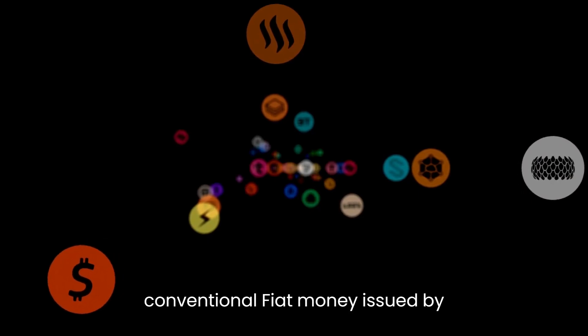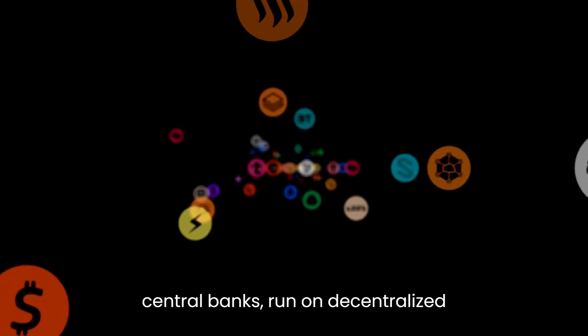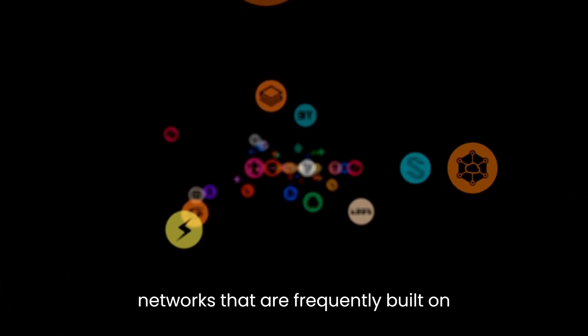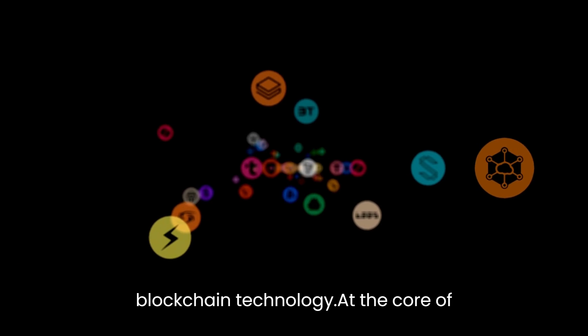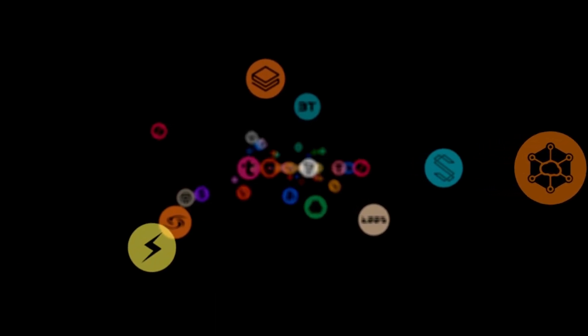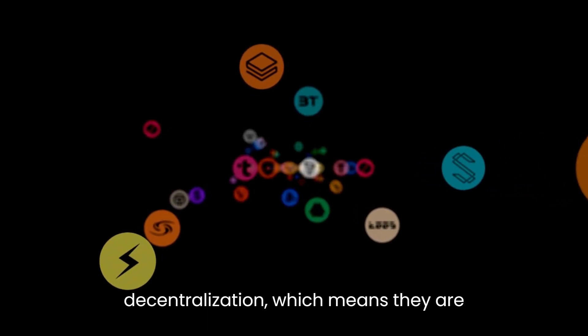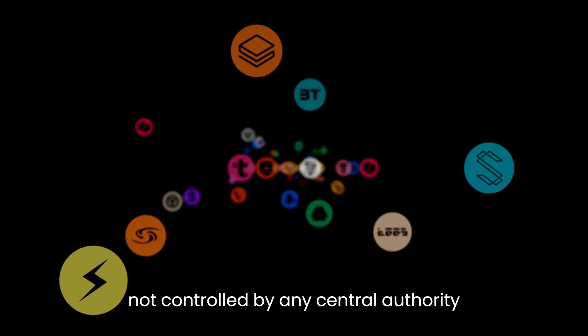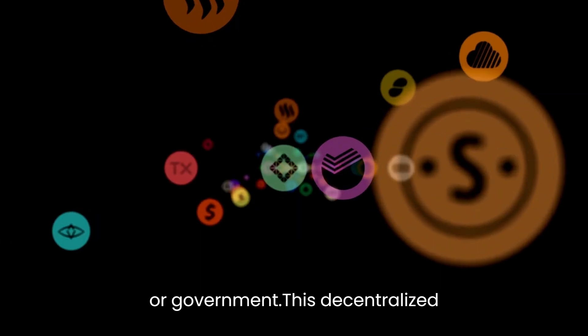Cryptocurrencies, as opposed to conventional fiat money issued by central banks, run on decentralized networks that are frequently built on blockchain technology. At the core of cryptocurrencies is the concept of decentralization, which means they are not controlled by any central authority or government.